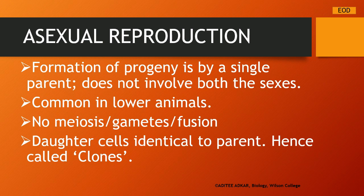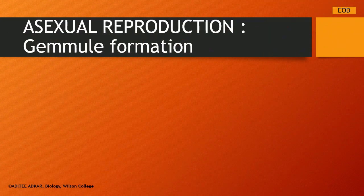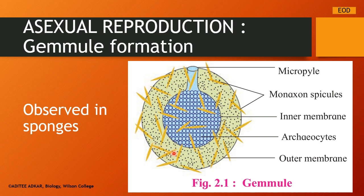The first type of asexual reproduction is gemmule formation, which is observed in sponges. A gemmule is a bud produced internally by the sponges. In the center of the gemmule you can see a mass of cells called archaeocytes. These archaeocytes give rise to new sponges — each archaeocyte is capable of giving rise to a new offspring. Gemmules form when environmental conditions are unsuitable or unfavorable. When favorable conditions of water and temperature return, these archaeocytes are released and each develops into a new sponge.